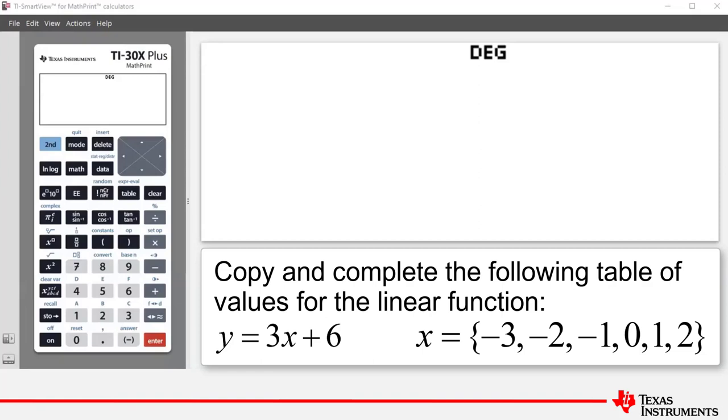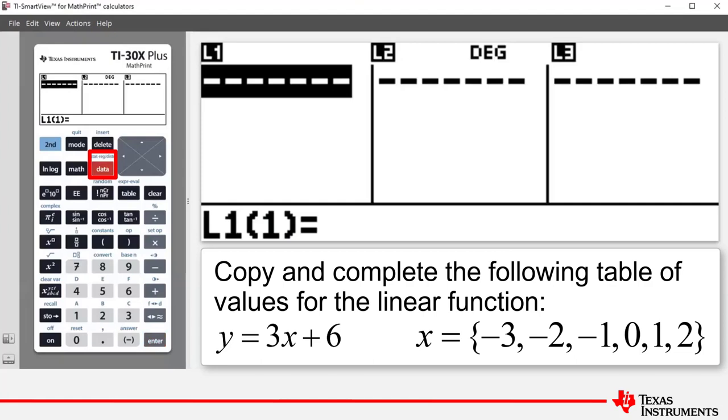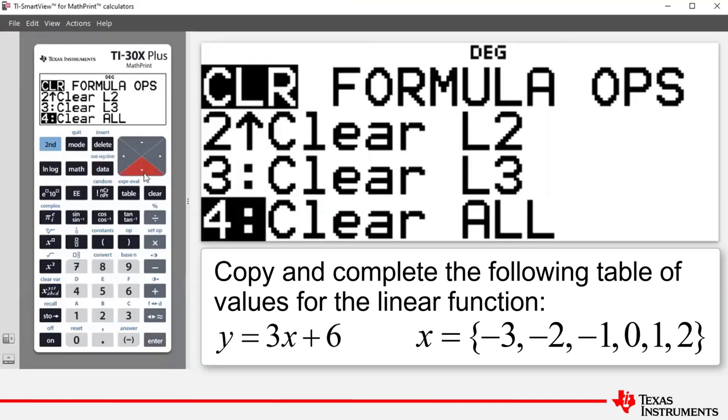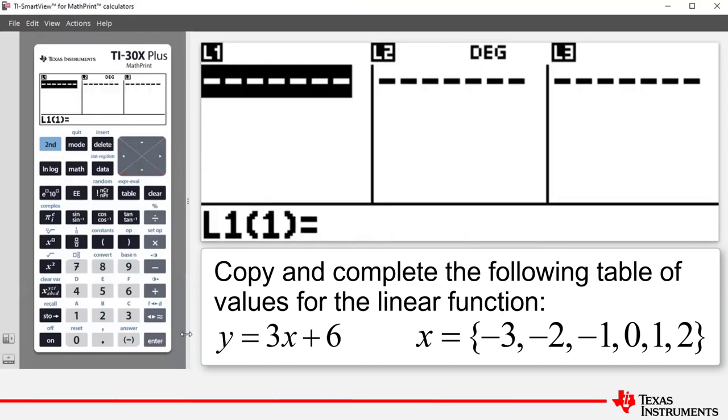To access the lists, press the Data button and that takes you to the Lists. If needed, press Data and either scroll down to number 4 or press number 4 to clear all lists. In other words, if you have used lists previously and you need to clear those numbers, press number 4 and that will clear all the lists.